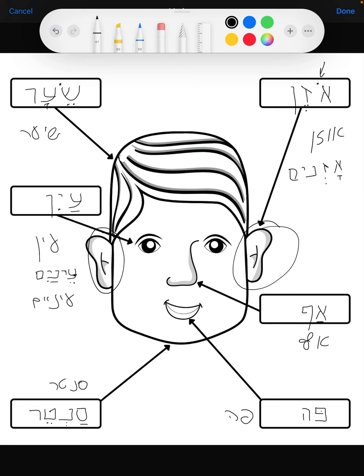And here we have patach and a chirik: ozenaim. And of course, if you are writing in cursive, you change it up a little bit, the spelling, and it goes ozenaim.